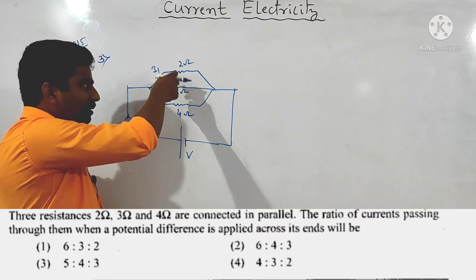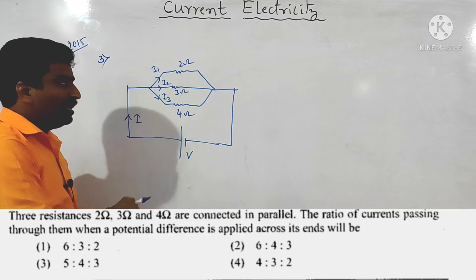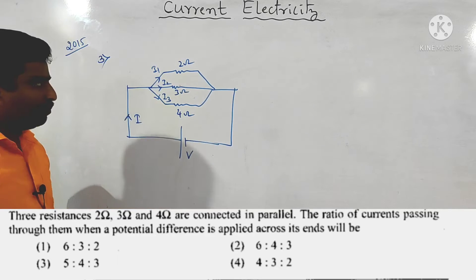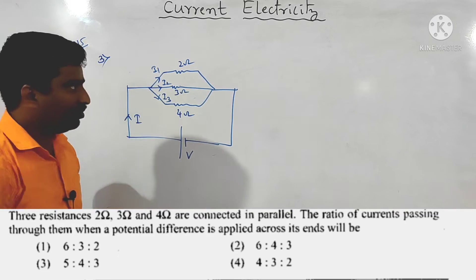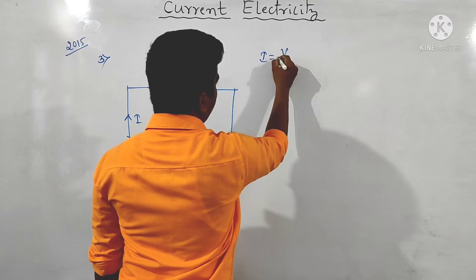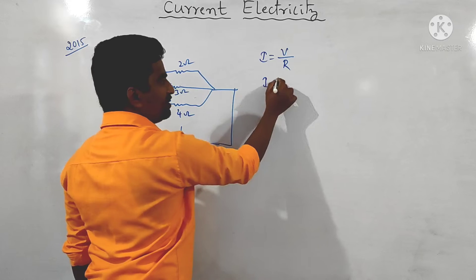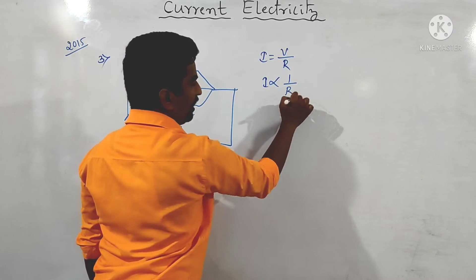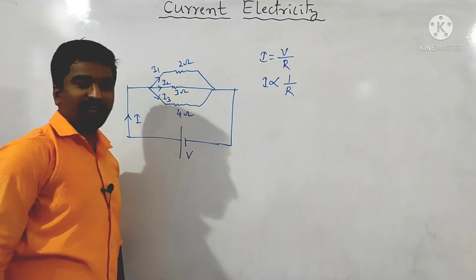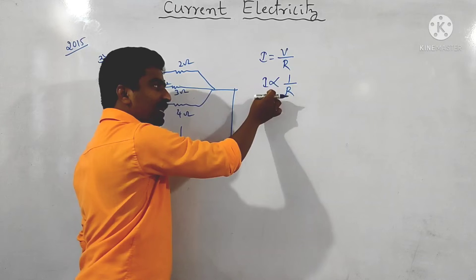In a parallel connection, the potential drop across each resistor will be the same. Since V equals I times R, the current I is directly inversely proportional to R — potential difference is constant. When we take the ratio, for example I1 by I2,